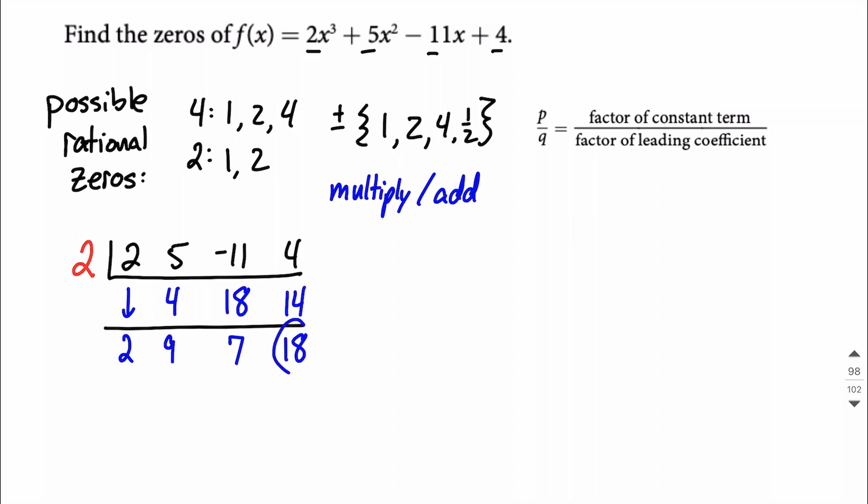All right, that's not really what we want, looking at this last value. That's the remainder, and we would like that to be a 0. So what that tells us is 2 did not work. 2 is not going to be a 0 for this function.